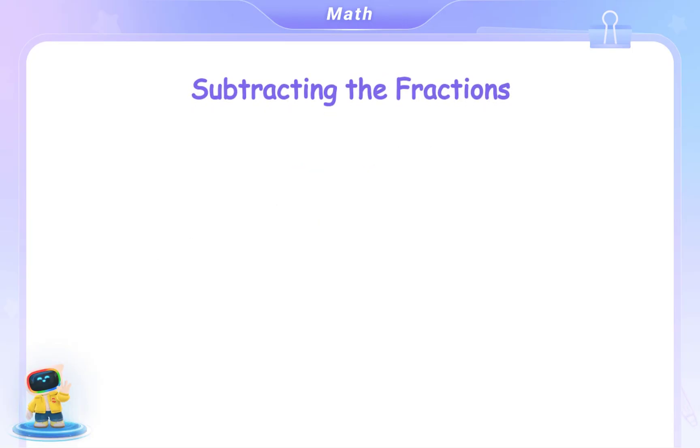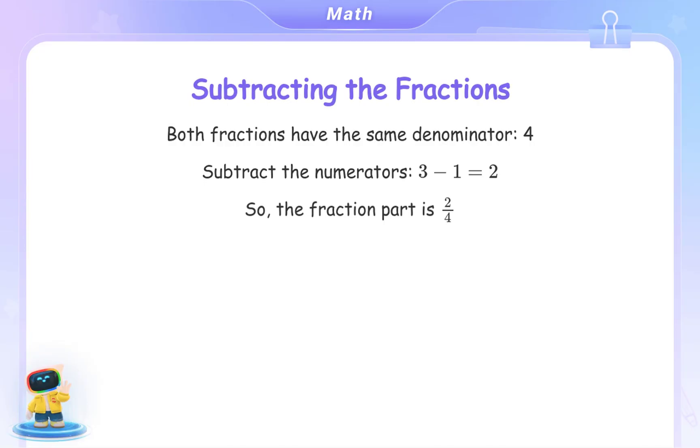Let's subtract the fractions first. Both fractions have the same denominator, 4. We only need to subtract the numerators, 3 minus 1 equals 2. So, the fraction part of our answer is 2 fourths.